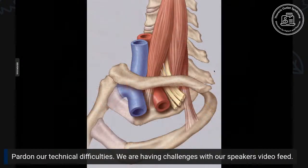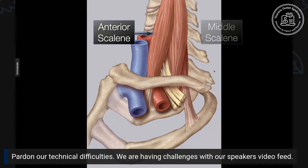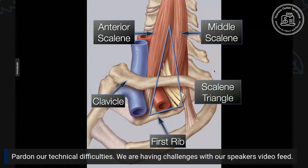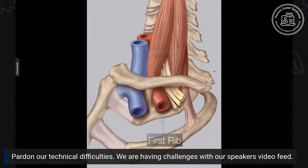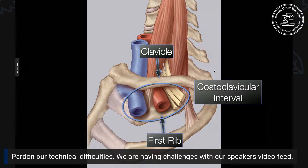From a side view, the anterior scalene and middle scalene form the scalene triangle, and the first rib is at the bottom of that triangle. The collarbone goes across the top of the first rib. The scalene triangle is shown in purple, but more important for our talk is the space between the collarbone and the first rib — the costoclavicular interval. That means 'costo' for rib, 'clavicular' for collarbone. The collarbone is very mobile, directed by the scapula or shoulder blade.